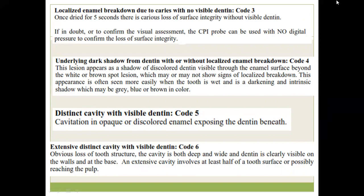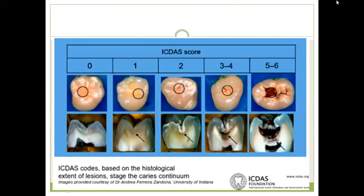Code 5 is a distinct cavity where the dentin is clearly visible. Code 6 is obvious loss of tooth structure — more than 50 percent of the tooth structure is lost, possibly involving the pulp, with clearly visible dentin on the walls and the floor. In the pictorial representation, Code 1 shows change in translucency after air-drying in the form of white opaque or brown color. Code 2 shows micro-cavitation limited to enamel. Codes 5 and 6 show clearly visible dentin. The histological pictures correlating with the ICDAS codes are a major advantage — ICDAS has histological gold standard validation.